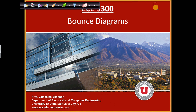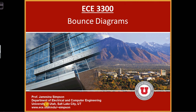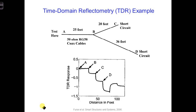Last time, we looked at how voltage and current reflections can occur along a transmission line at the load or at faults. Really, whenever there is any discontinuity in the impedance on the transmission line, a reflection will be generated.